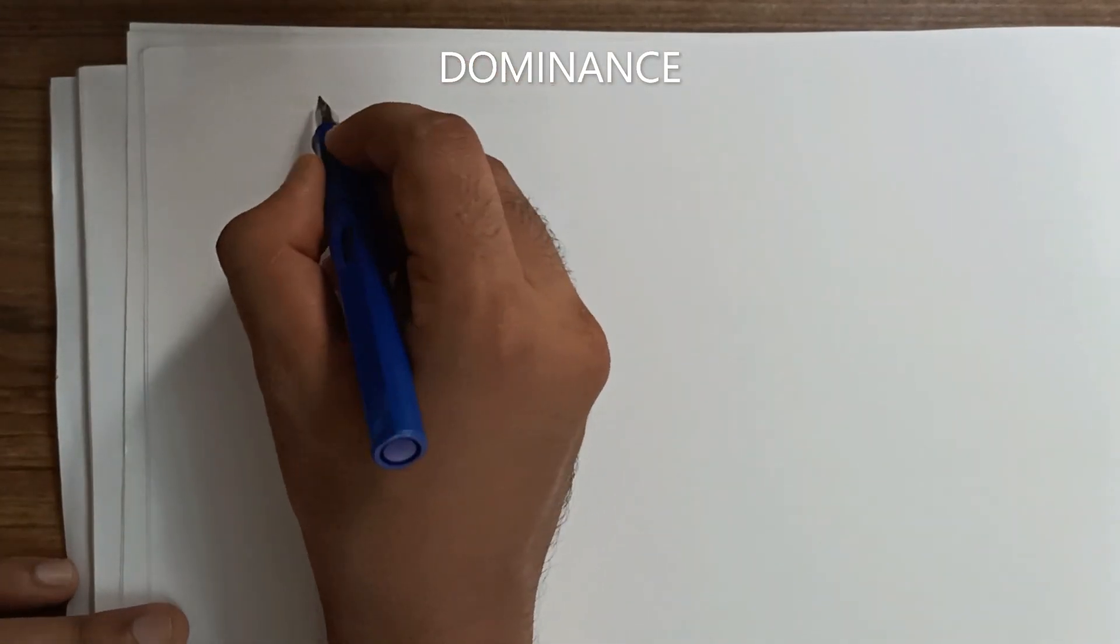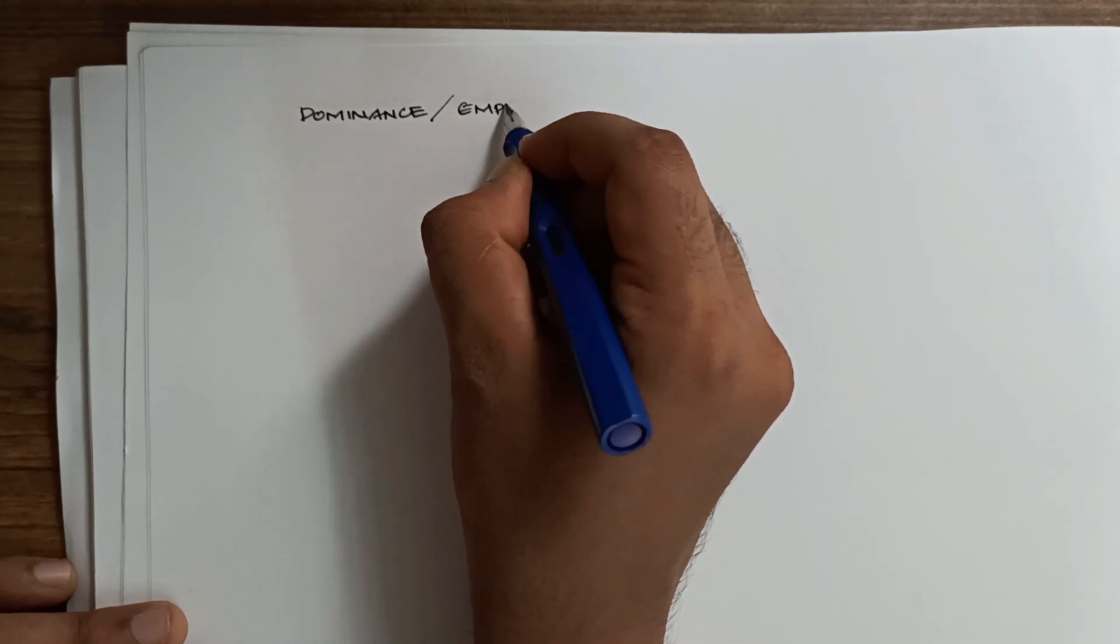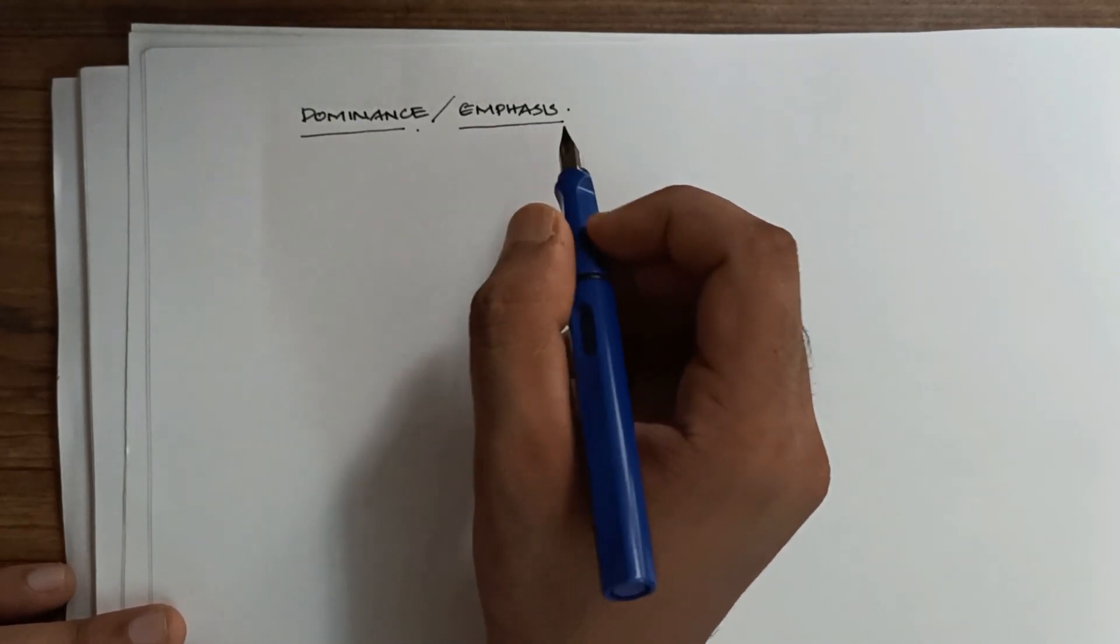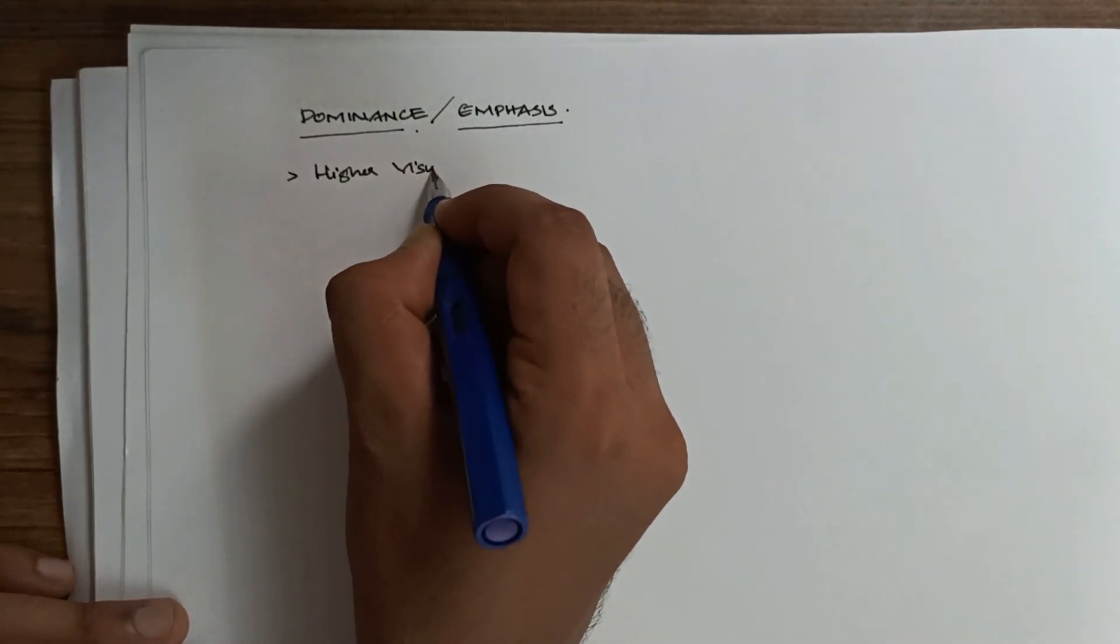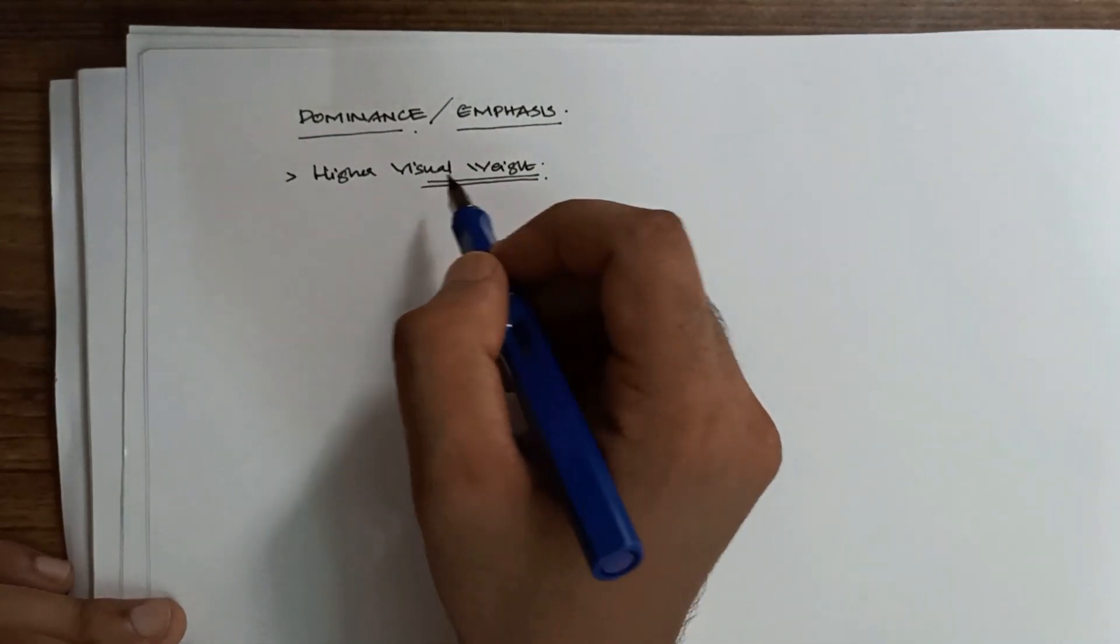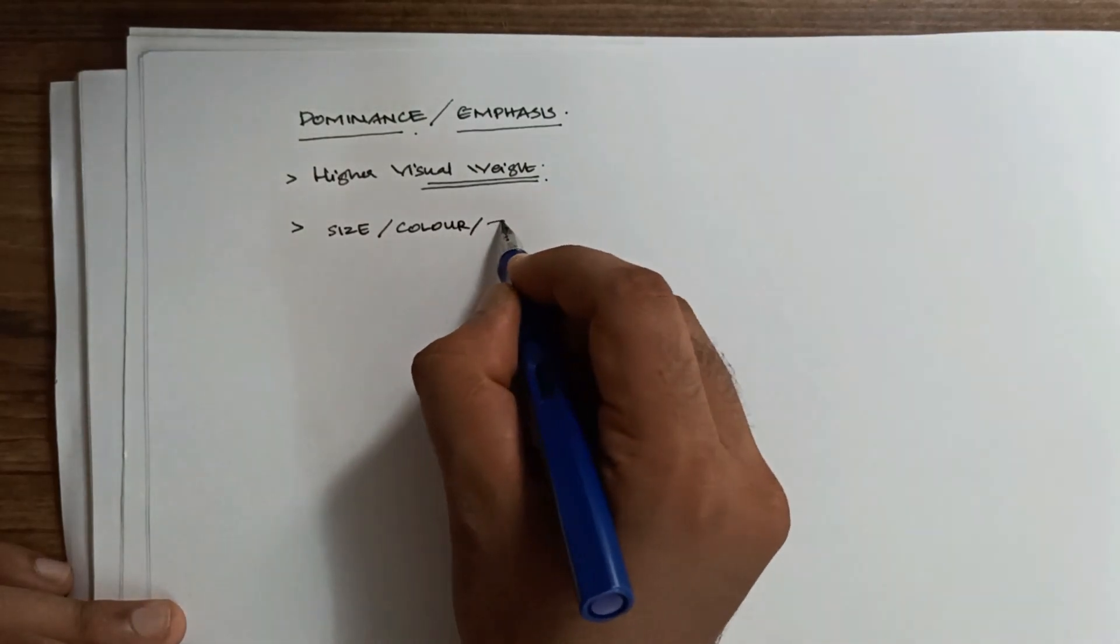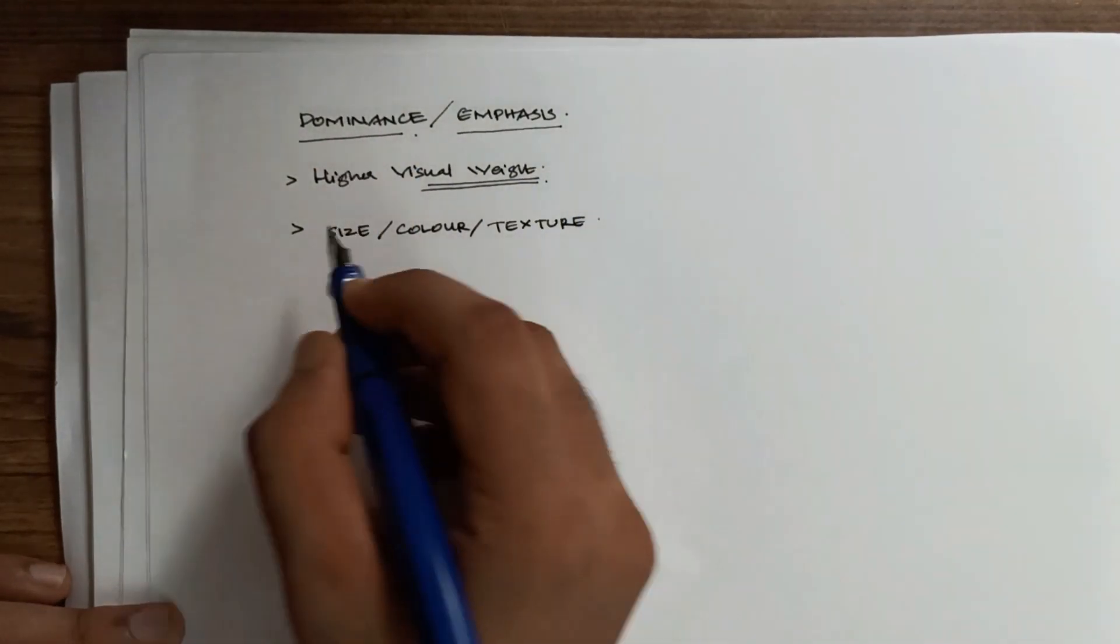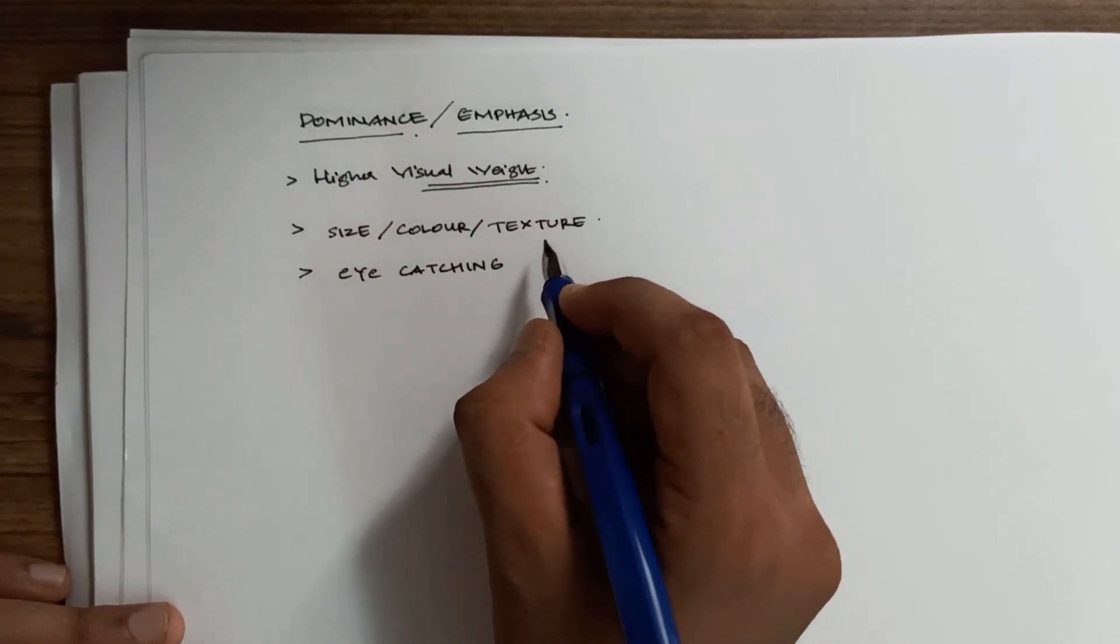Now let's discuss dominance, also called emphasis. Dominance or emphasis is when a certain aspect of the composition carries a higher visual weight. The keyword here is visual weight. How to provide higher visual weight? It may be either in terms of their size or color or texture. Whenever we have a dominating character or feature in a composition, our eye immediately goes there. It is an eye-catching feature of any composition.